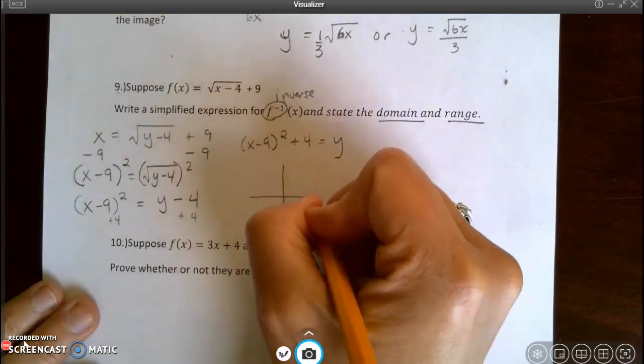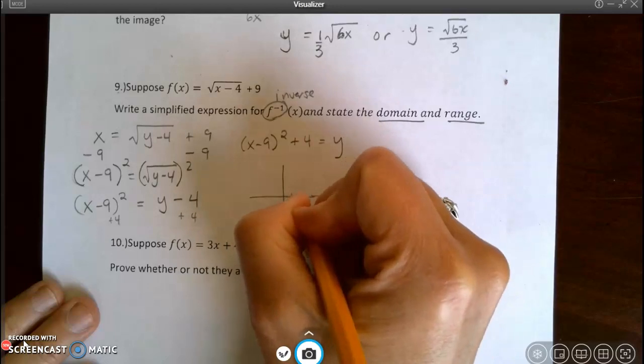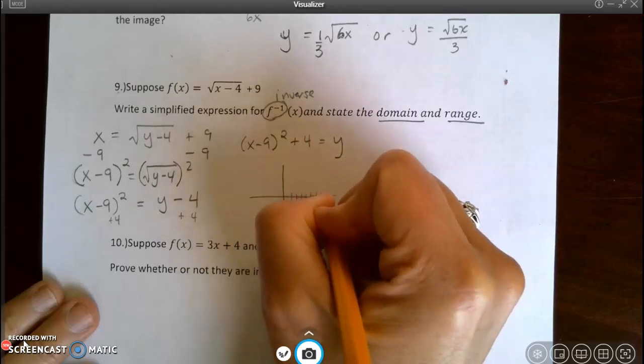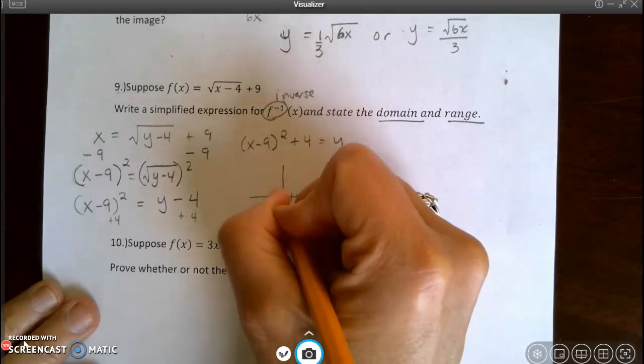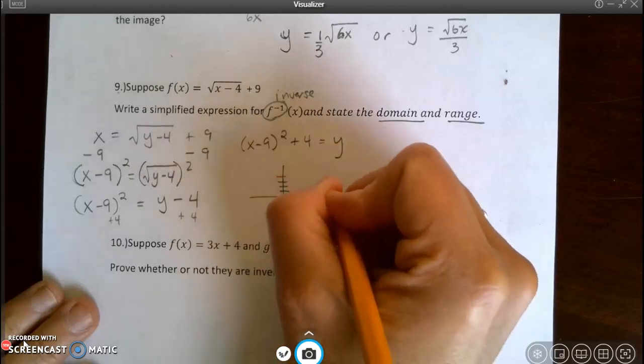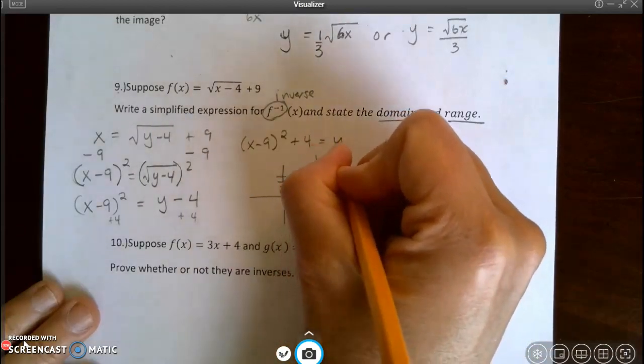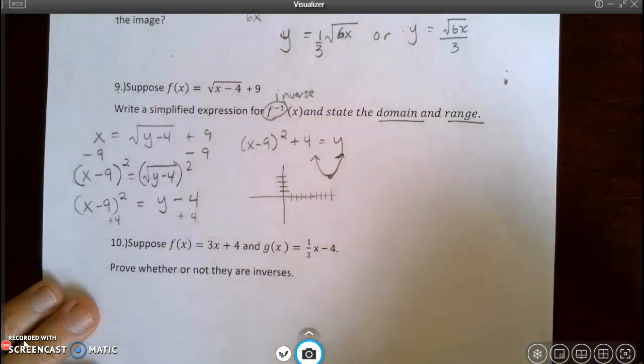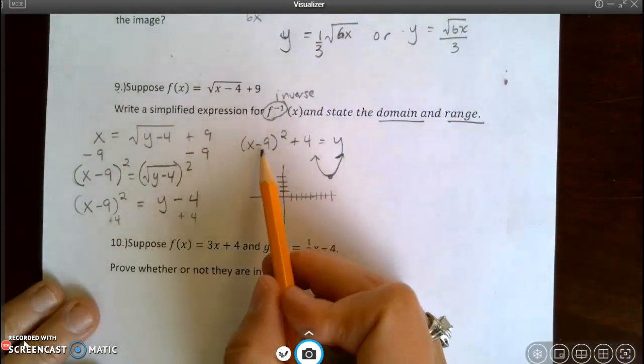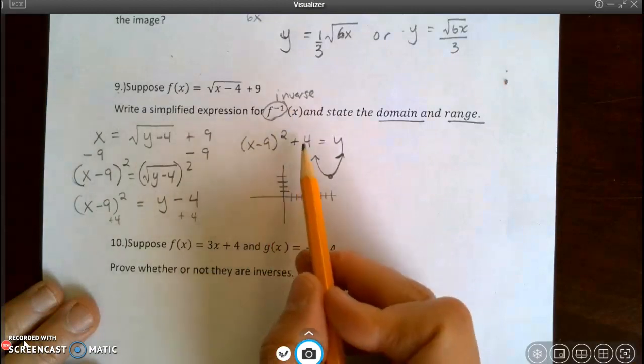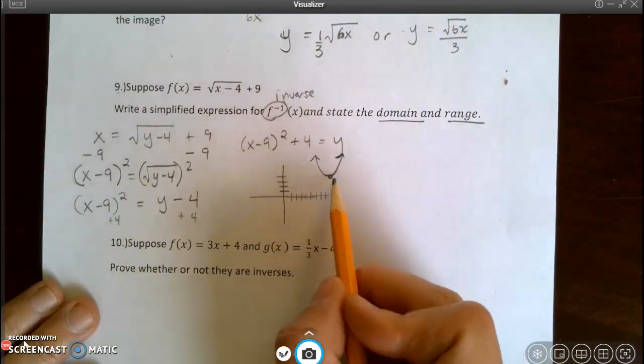And it has been translated 9 to the right, because remember x lies. So I'm going to say 9 to the right: 1, 2, 3, 4, 5, 6, 7, 8, 9. And 4 up: 1, 2, 3, 4. And it's opening up. So this makes this obvious to me. 9 to the right and 4 up. Draw my quadratic.